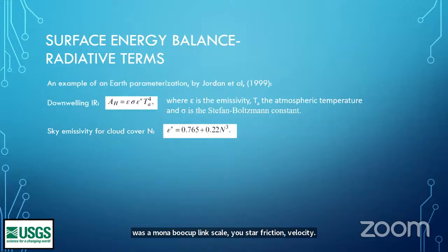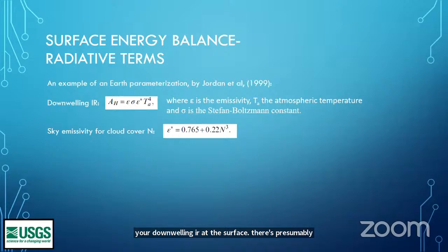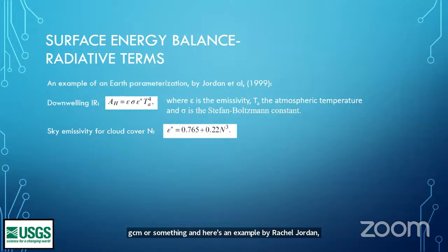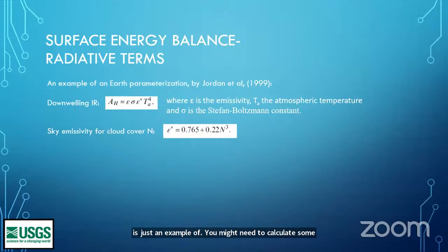If you're going to calculate your downwelling IR at the surface, there's presumably some parameterization you need if you don't get it from a GCM. Here's an example by Rachel Jordan, who wrote the SNTHERM snowpack model. She used cloud cover fraction N to give an effective emissivity of the sky for the downwelling IR. This is just an example that you might need to calculate some things and parameterize some things.